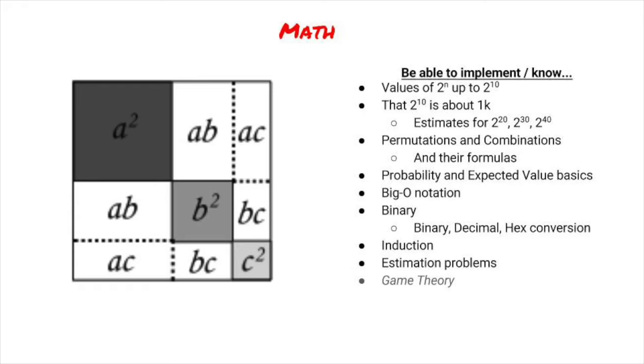You can get far with knowing everything up to 2 to the 10, and then the 2 to the 10 multiples. For example, 2 to the 32nd, it's 2 squared times 2 to the 30th, which is 4 times a billion. Similarly, know that 2 to the 64th elements are probably not fitting in RAM. Know the difference between permutations and combinations, and the formulas for calculating numbers of both. Know the basics of probability and expected value. There are many questions that want a random selection with uniform probability. Know what that means. Know big O notation. Know binary and how to convert numbers from and to binary, decimal, and hex. Understand induction and how it relates to recursion.